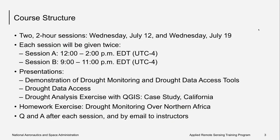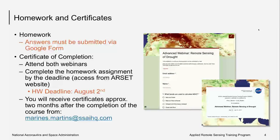We will have lectures and demonstrations, followed by exercises online and in QGIS that you can follow along with each session. We will have one homework assignment. This will include a document with the steps that you must take and answers that will need to be submitted via Google Forms. The link will be available after the final session on the website, and we will post it in the chat box during the final week. To receive credit for homework, you must submit all answers via Google Forms by August 2nd. To receive a certificate of completion, you must attend both live webinars and complete the homework. It takes some time to process these certificates, so you can expect to receive them about two months after the completion of this course.